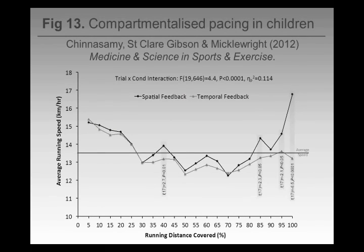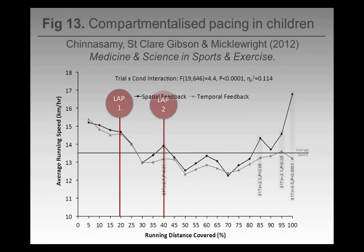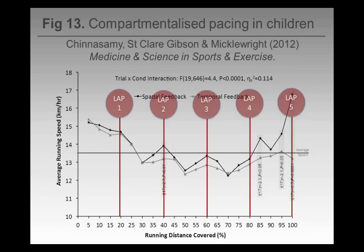They make decisions based on discrete points in the future that they know are coming — they might be related to landmarks. We saw this in a child pacing study where we asked them to run laps. In the middle section you see this oscillation in pace: as they're running away from the start-finish line they're slowing down, and as they see the finish line they're speeding up again. Evidence that even in quite short events, people have this tendency to break things down.